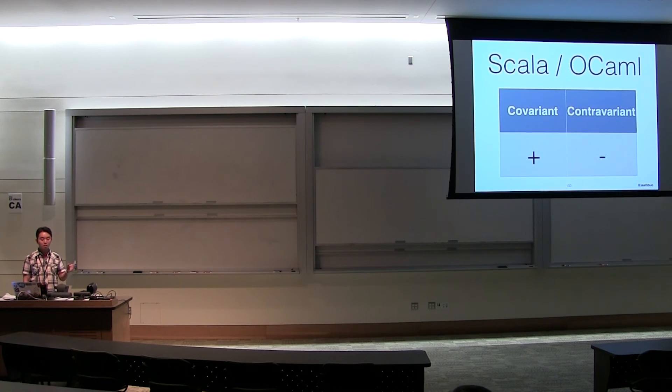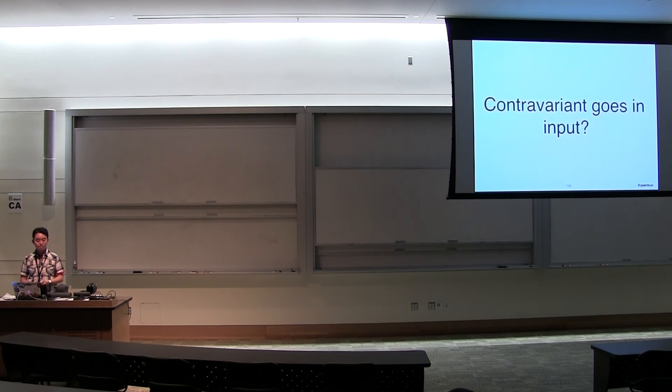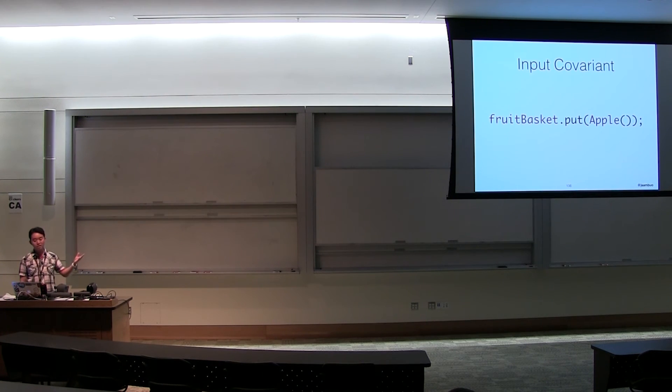Scala and OCaml use plus and minus to represent covariance and contravariance. You can think of it as covariance having a positive relationship and contravariance having a negative or reversed relationship. C-sharp and Kotlin is a bit more interesting. They chose to use the keywords out and in. In this case, out represents covariance and in represents contravariance. This is actually pretty intuitive. This is because your inputs are contravariant and your outputs are covariant.